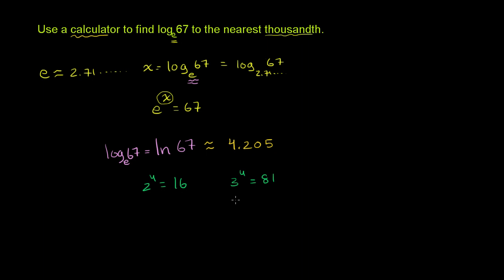So it feels right that something like 2.71 to a little over the fourth power should get you to a number pretty close to 3 to the fourth power. That makes sense because 2.71 is actually closer to 3 than it is to 2. So this feels right that you take this to a little over the fourth power, you get to 67.